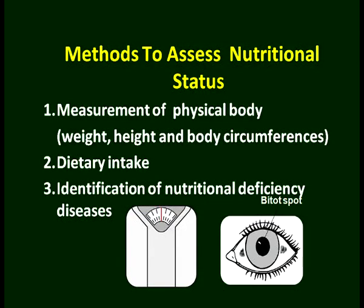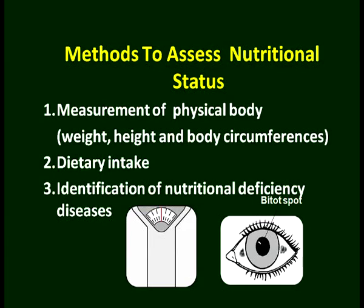Now, how will we assess these things? Mainly there are three methods. Number one: measurement of the physical body in terms of weight, height, and body circumferences — which can be your girth, head, or arm, called mid-arm circumference. The second method is dietary intake. Third is identification of nutritional deficiency diseases.